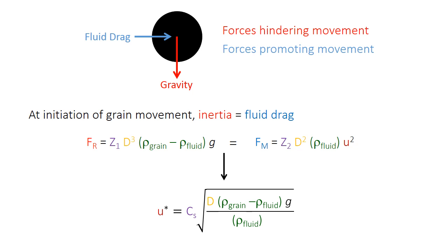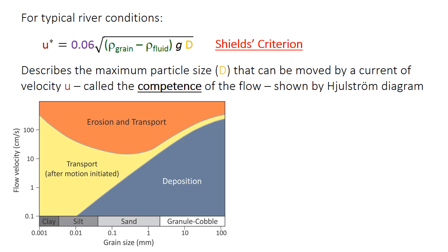We can simplify this further because for typical river conditions, this constant term is approximately 0.06, determined by trial and error through experiment. And because fluid density is approximately 1 gram per cubic centimeter, we don't need to divide by fluid density. This simplified equation describes something called the Shields criterion: the maximum particle diameter D that can be moved for a given current velocity U — called the competence of the flow. A given water flow can move particles smaller than a specific diameter, but particles larger than that diameter won't be transported. We can also illustrate this graphically with the Hjulström diagram, though the relationship really only holds well at grain sizes bigger than one millimeter for erosion; deposition tends to behave quite nicely throughout.